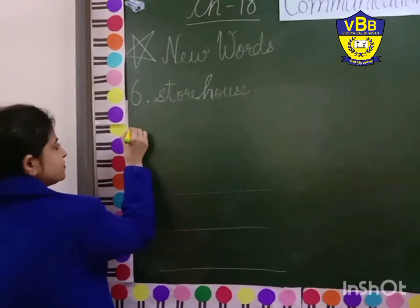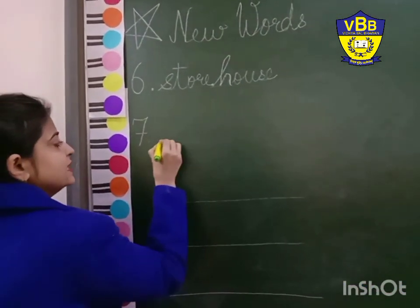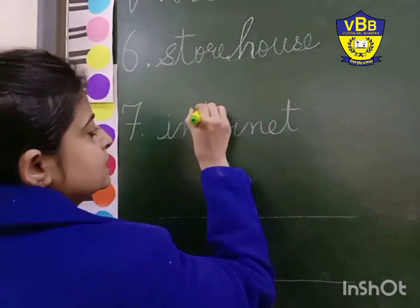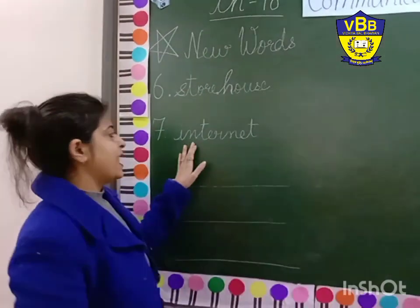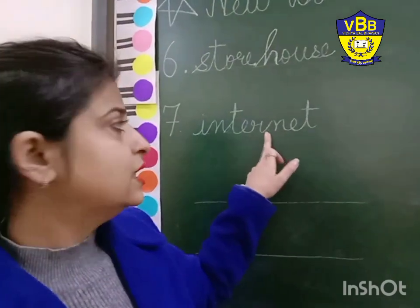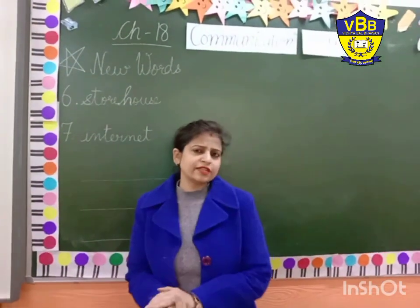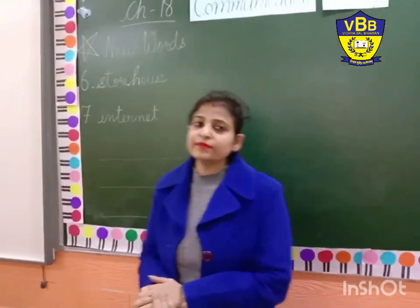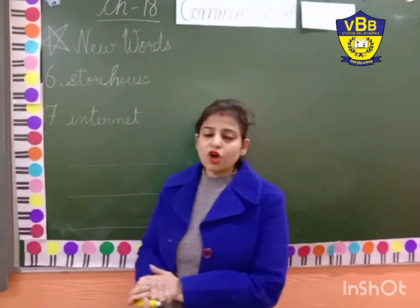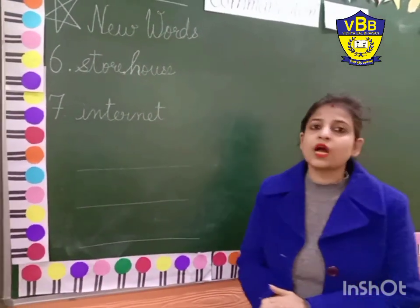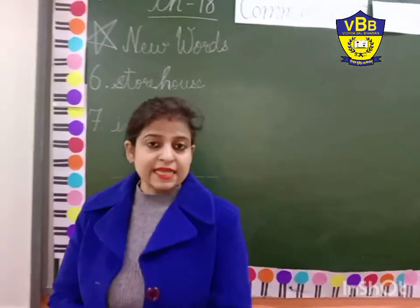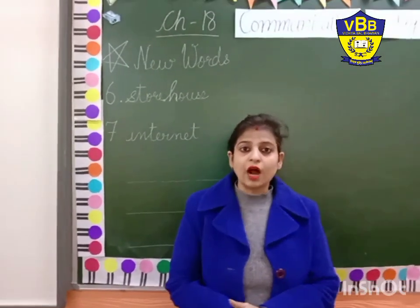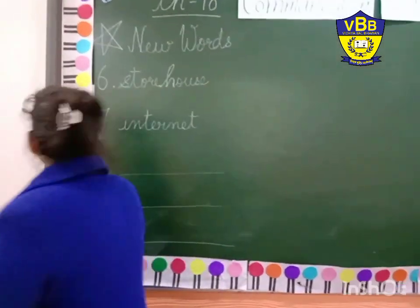Number 7 is internet — I-N-T-E-R-N-E-T. Nowadays we can't live without internet. We use it all the time. Without internet we can't use our smartphones or our laptops. So for using these things we have to have internet. We have Wi-Fi in our houses.